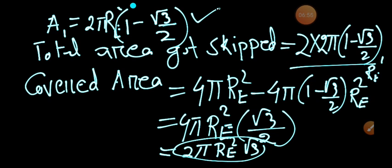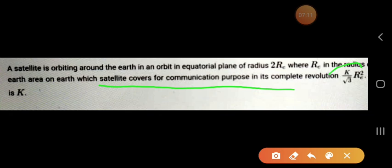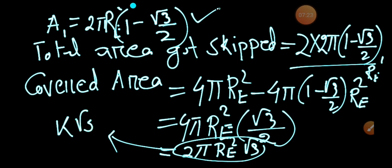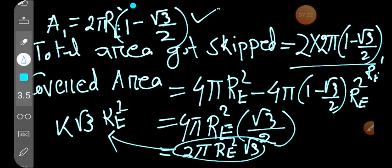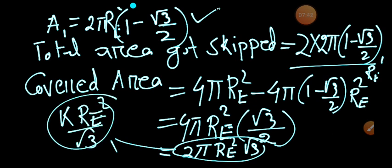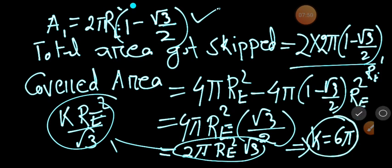Reading the question again: the covered area equals K times root 3 by root 3 times Re² — that is K times Re² divided by root 3. Comparing our result 2π root 3 Re² with K Re² divided by root 3, we can equate and solve to get the value of K equal to 6π.